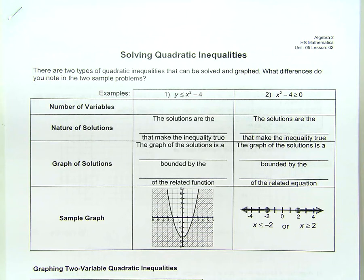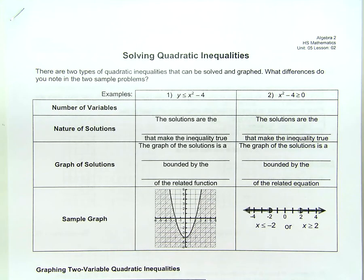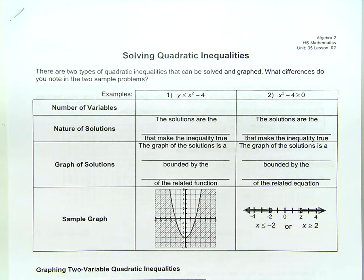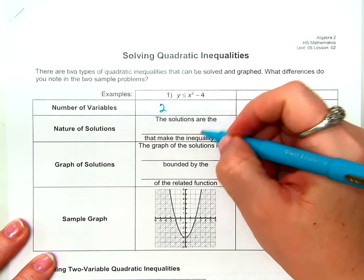What differences do you notice in the two sample problems? Look at these two sample problems right here. The number of variables is the biggest deal, and as small a difference as that is, it actually makes a big difference in how you go about solving them. Let's look at the first example, number one. How many variables does it have? Two. What are those variables?